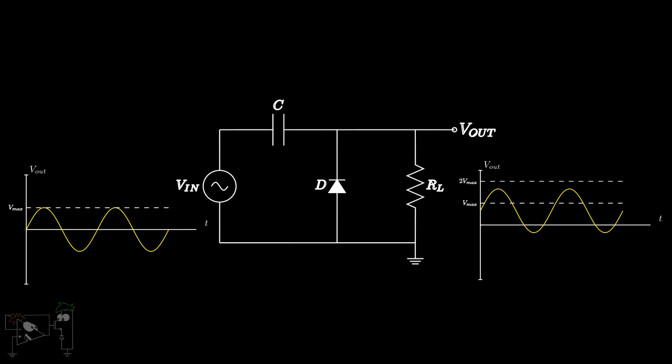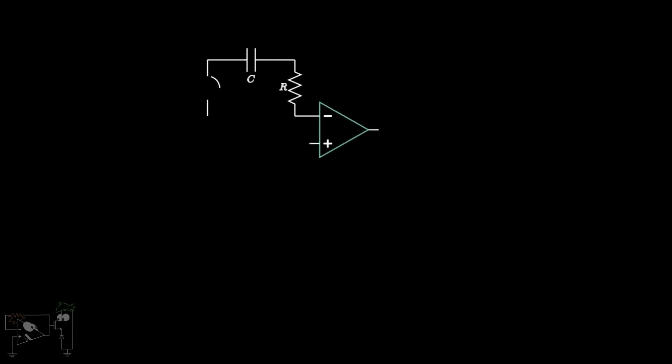This problem can be solved using an active clamper circuit. An active clamper circuit can be built using an op-amp, a capacitor and a diode. This is the circuit of an active clamper. Suppose we have a load resistor RL connected at the output. Note that the diode is in the feedback loop.